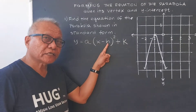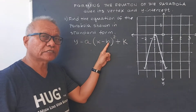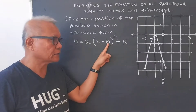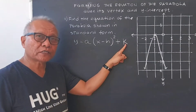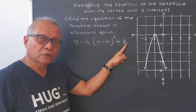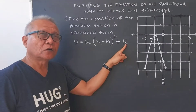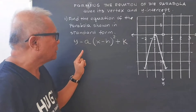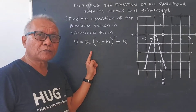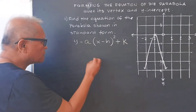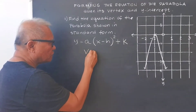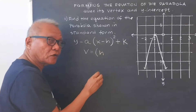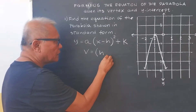The h in this formula — in the vertex form — is the axis of symmetry, which is equal to x. The k here is the lowest point or minimum point, or the maximum point or highest point if this one is negative. So the vertex of our parabola is (h, k), where h is also the axis of symmetry x, and then k.